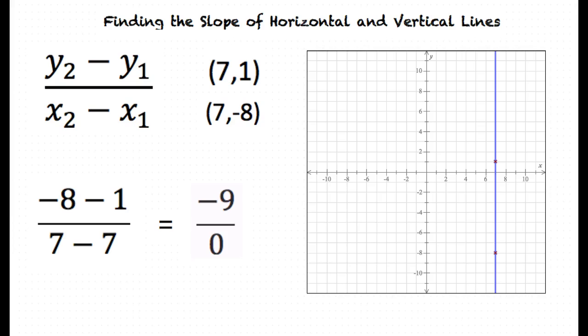Therefore, anything divided by 0 is undefined. This turns out to be true for all vertical lines, as the change of x is always 0, so any slope of any vertical line is going to be undefined.